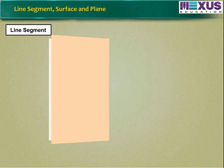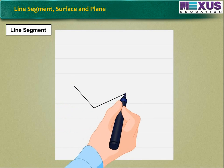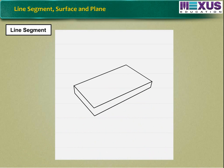If a sheet of paper is folded and then opened, the folded part represents a line segment. Or if we trace an object on a paper like a matchbox, the outline of each side gives the idea of a line segment.